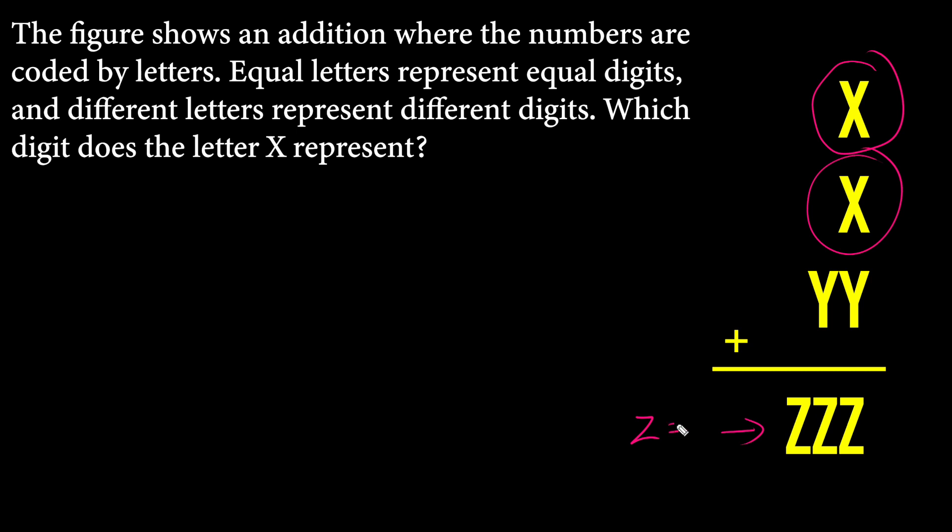So Z could be only 1, 1, 1. Because if YY is 99, then Y is going to be the only value of 9. So this is the most restrictive part of the question. Why? Because this ZZZ limits us to 1, 1, 1 only.